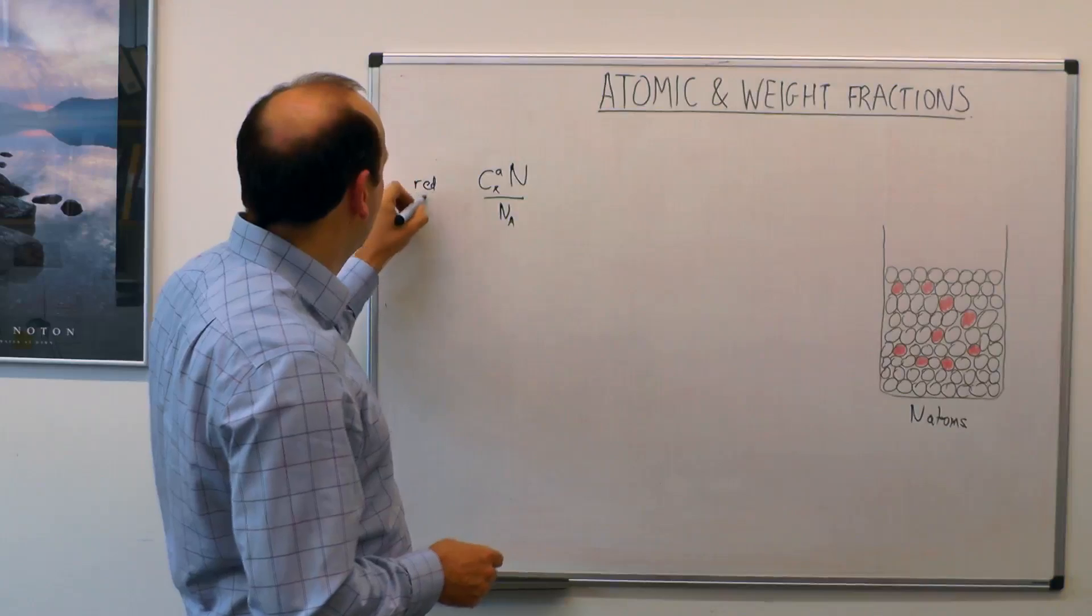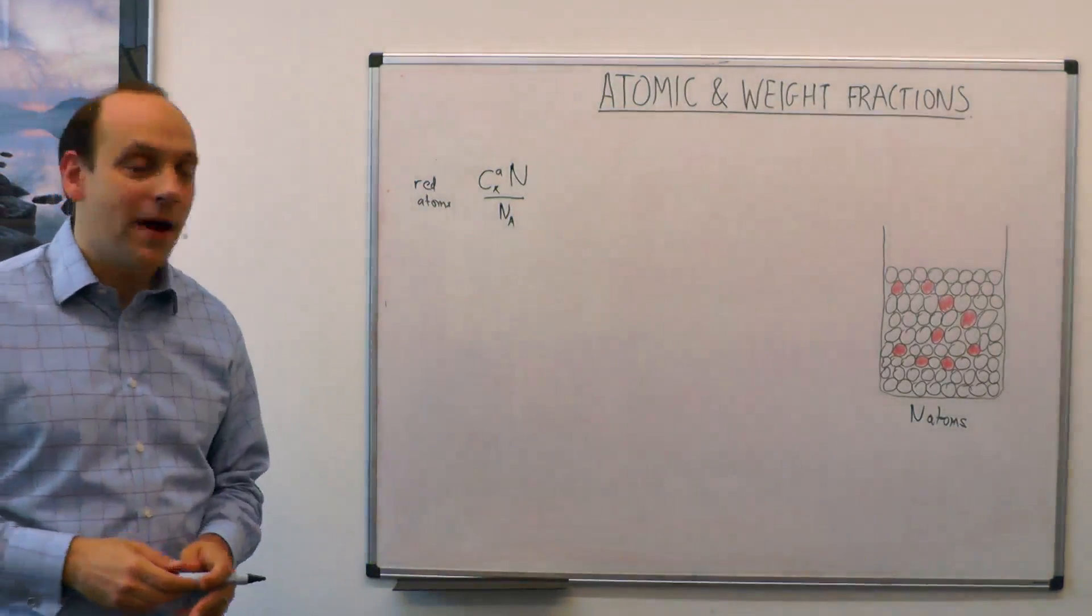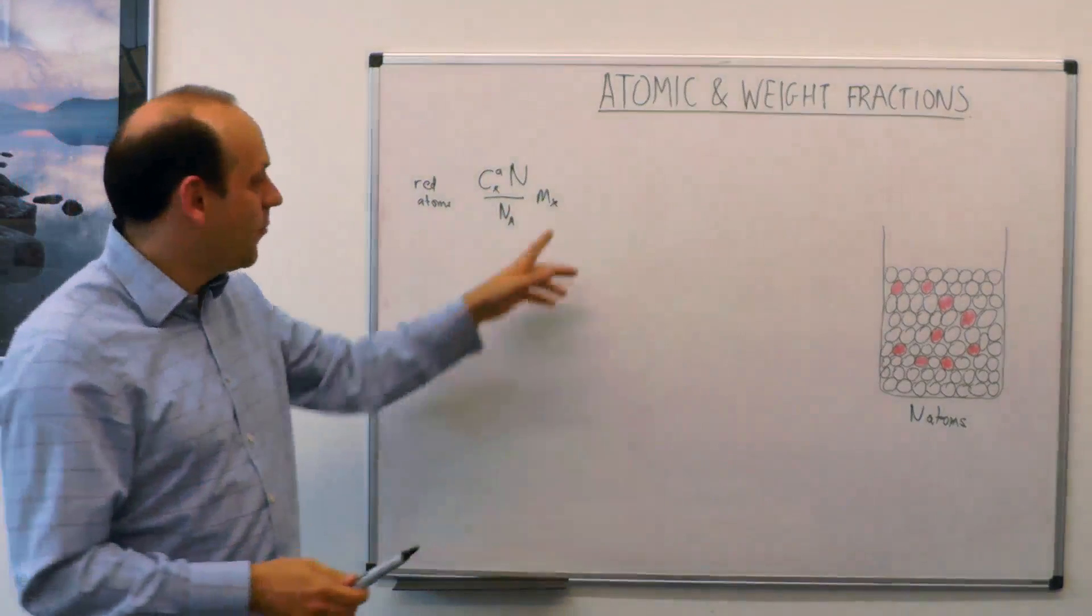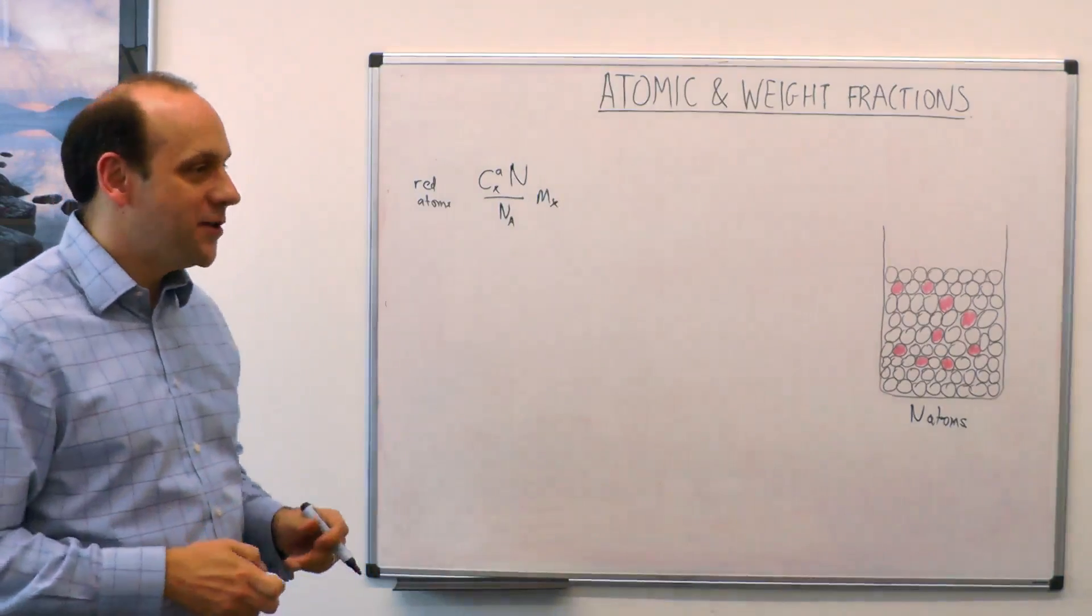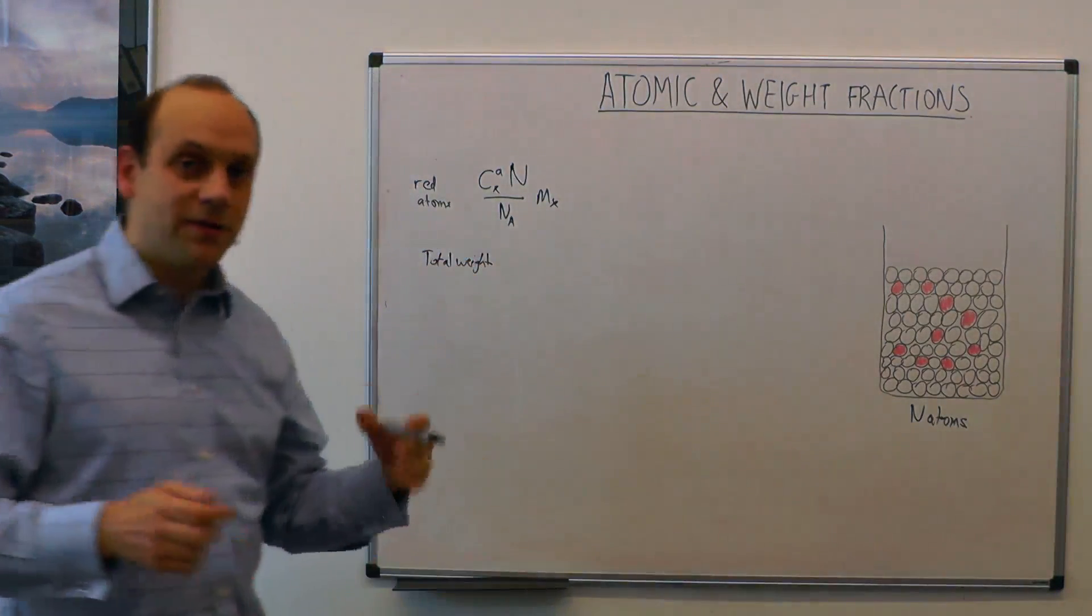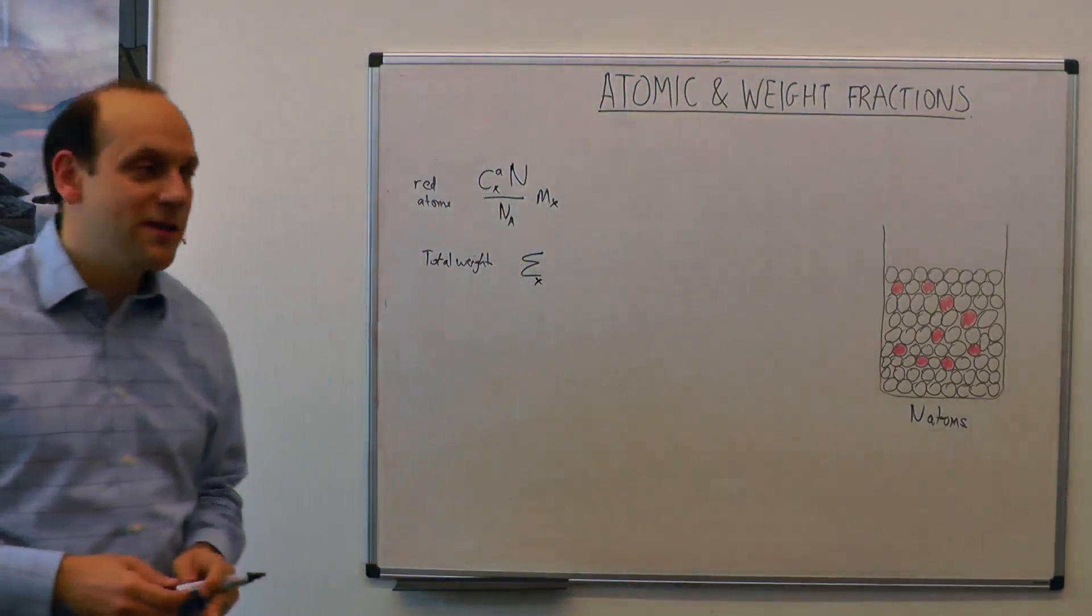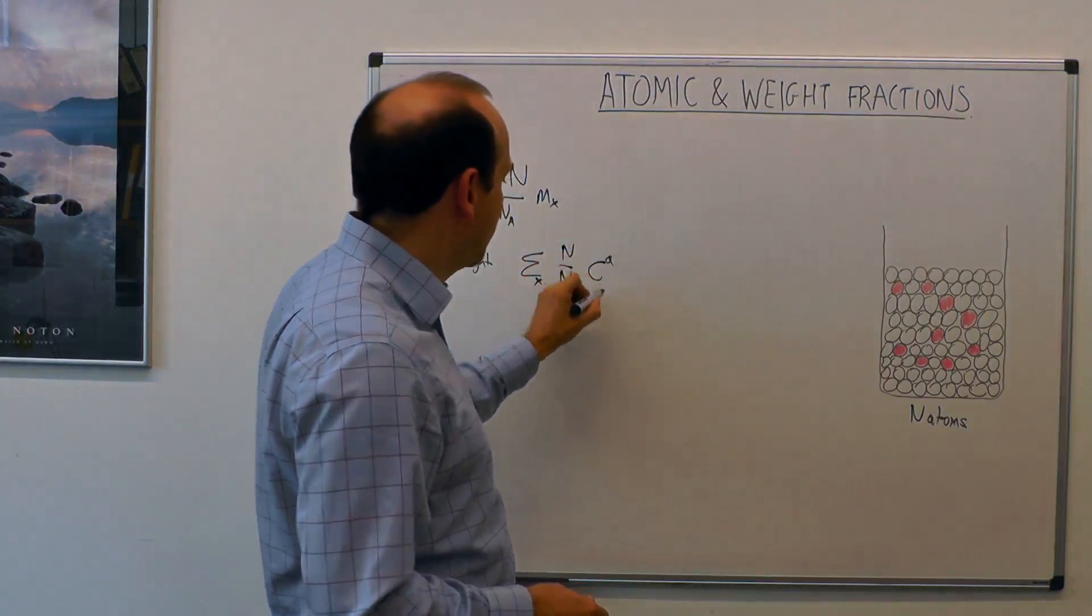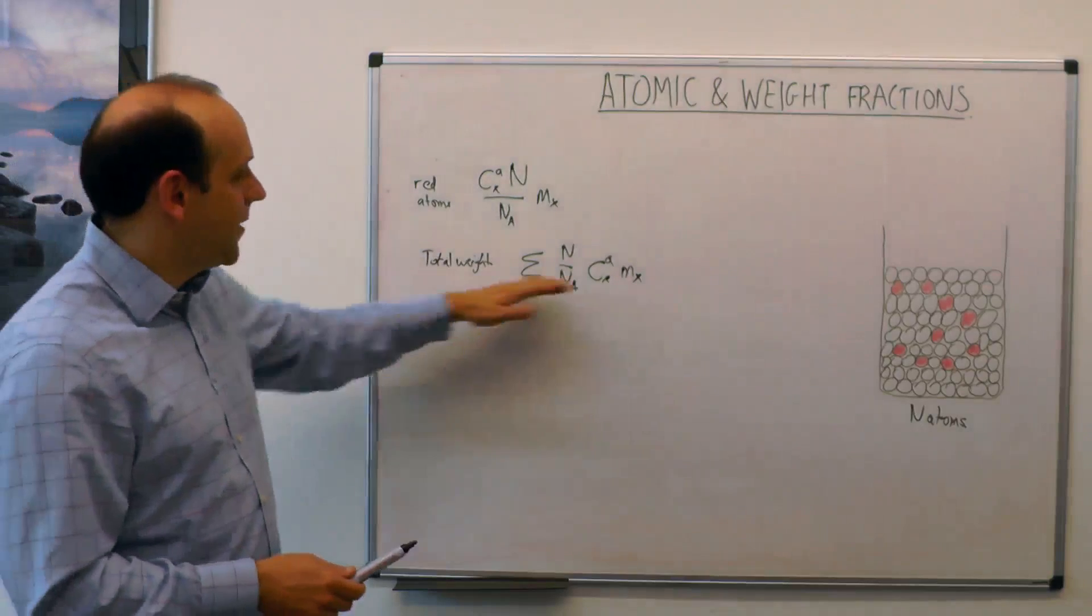Avogadro's number, then we'd have that many moles of red atoms in our bucket. If we wanted to know how much they weighed, we'd multiply by the molar mass of our species x. Say it's hydrogen, that'd be one. If it's carbon, that'd be 12, whatever it is. If we added that up for all the different types of species, the total weight we would find would simply be the sum of that over all the possible species x. That would give us our total weight.